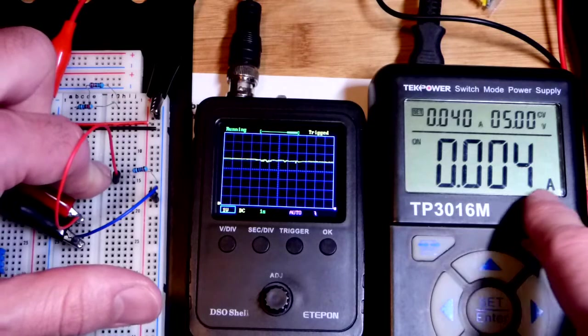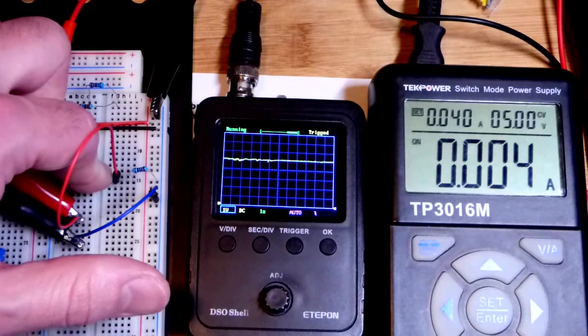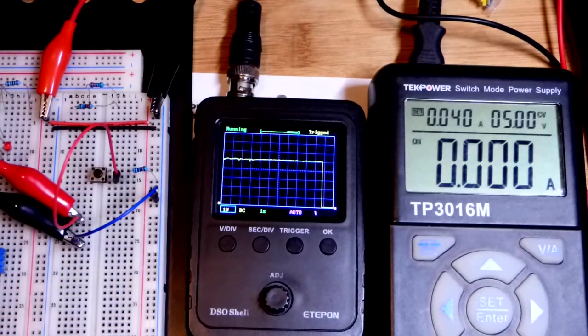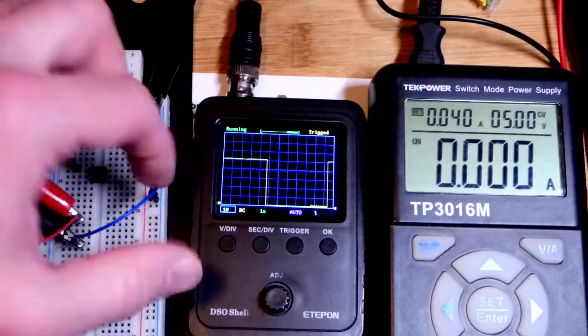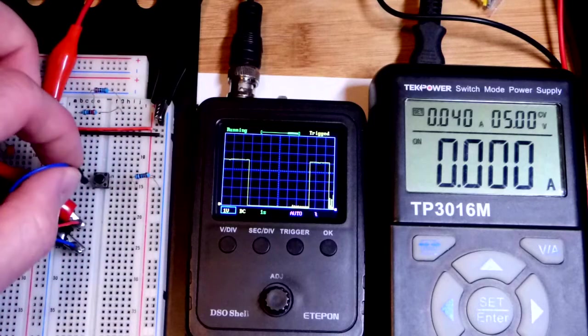Since we have about four times—a little more than four times—the resistance, we're close to about a fourth of the current with the five volts across it. I let go of the button, now all the voltage is across the switch right here.